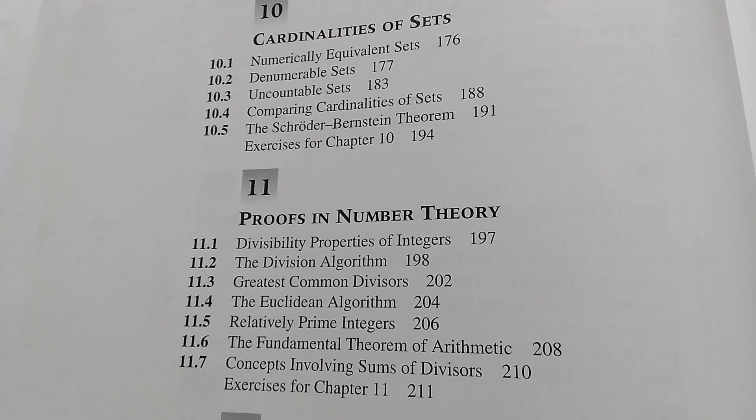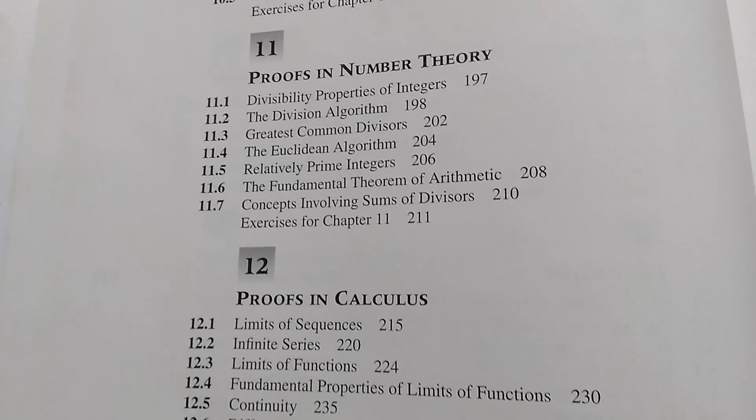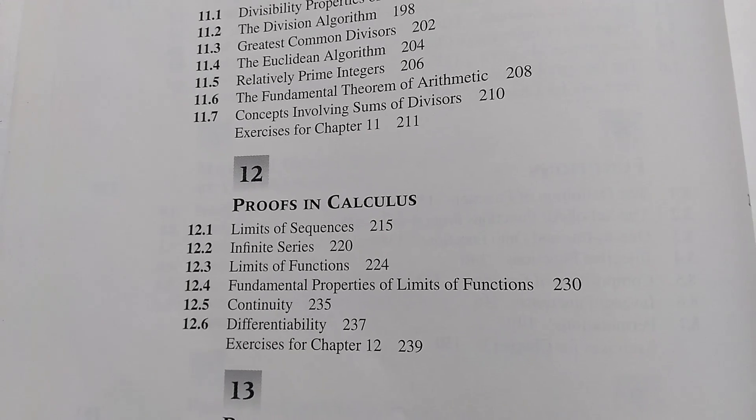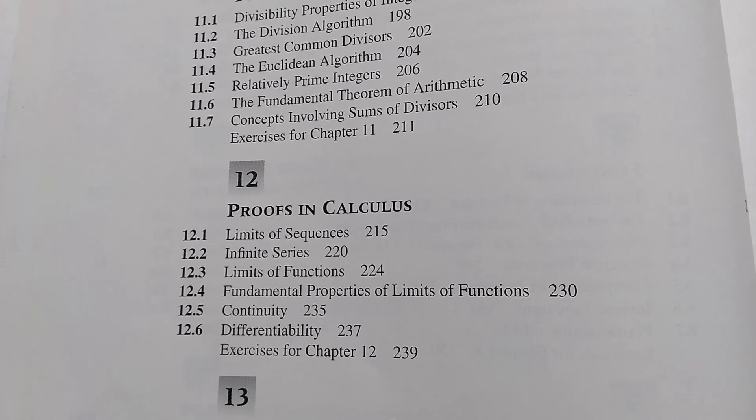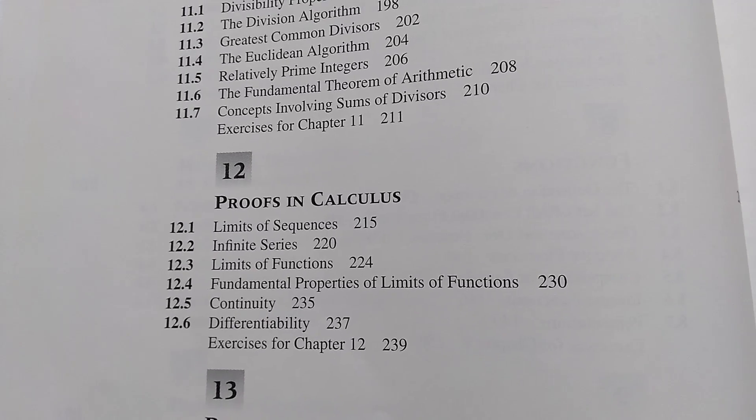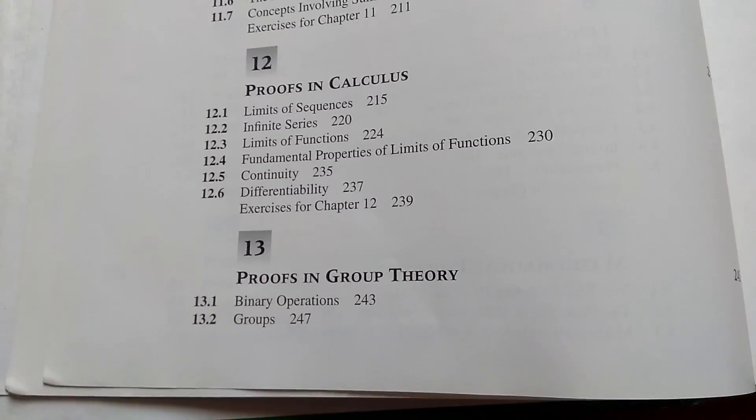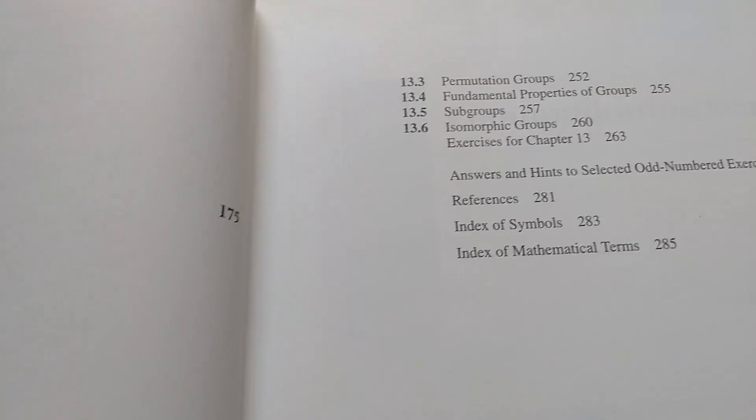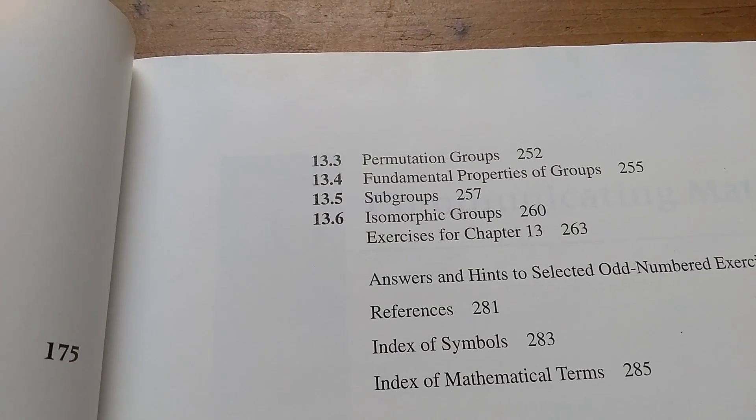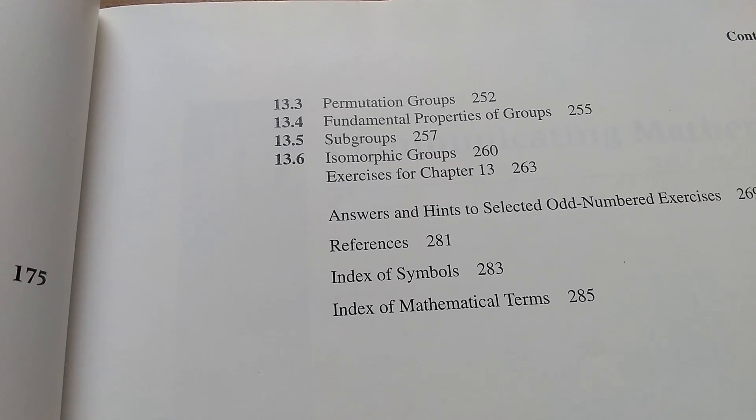And then chapter 11 is on proofs and number theory. Twelve actually has proofs in calculus, which is very, very nice for a proof writing book. Not all proof writing books have this, so this is a huge plus to this book. And 13 has proofs in actual group theory. So as you see, we have permutation groups, subgroups, and even isomorphic groups.